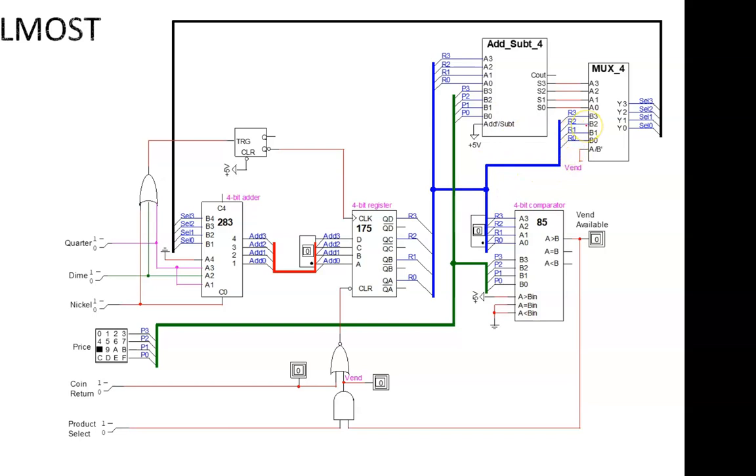And we see the select bit of the MUX determined by this Vend signal. That Vend signal is simply the output of this AND gate, which says that Vend is available and the user has selected a product.